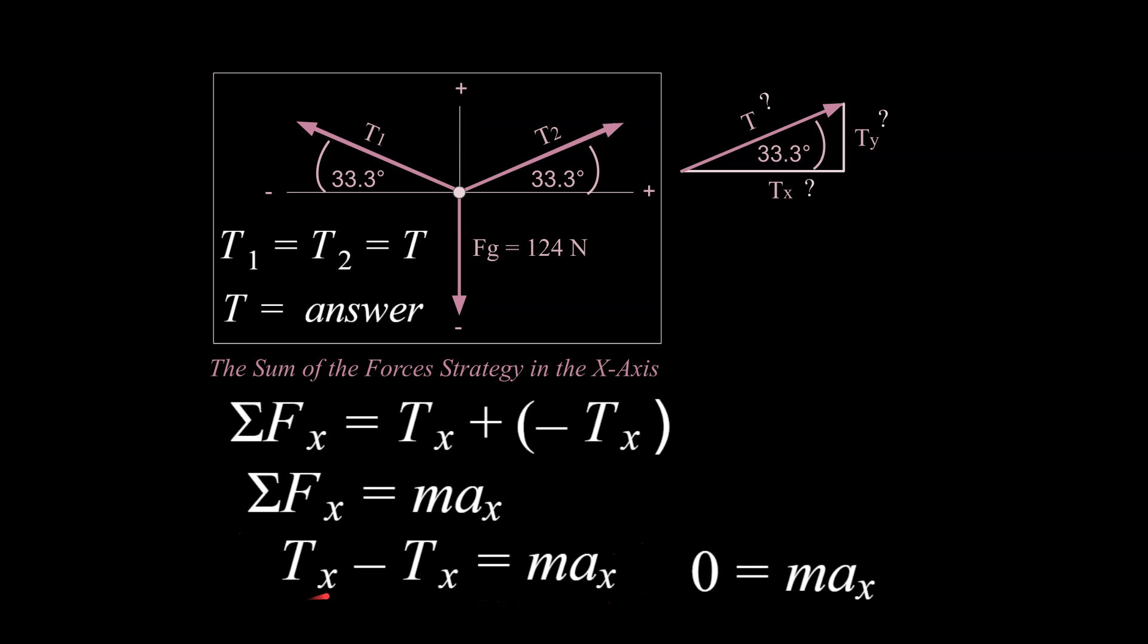Well, that's not really helpful because tx minus tx is zero, or acceleration in the x is zero. So effectively, we're just proving that zero is equal to zero.